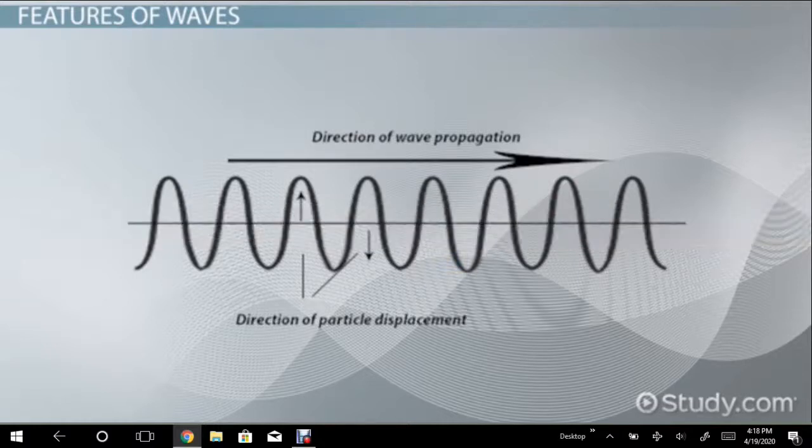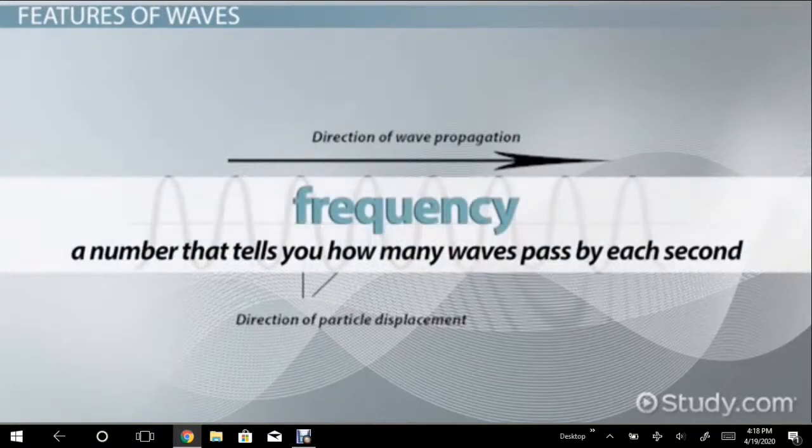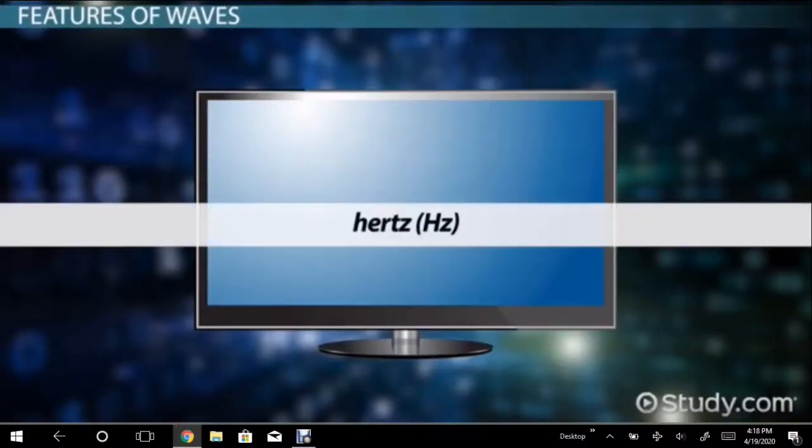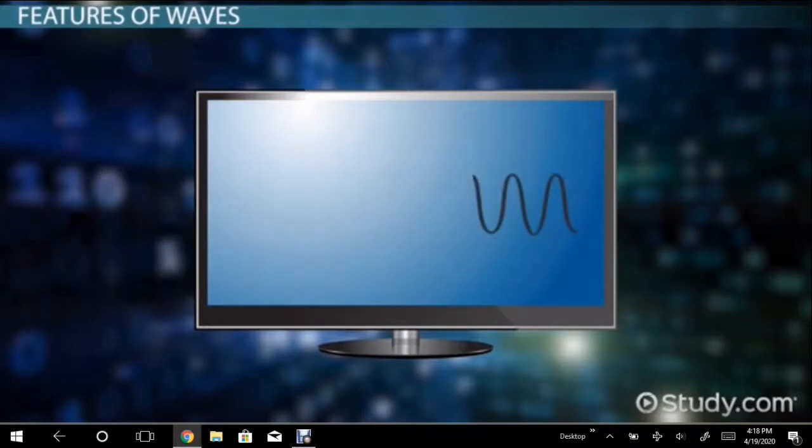Last but not least, frequency. A sound wave's frequency is a number that tells you how many waves pass by each second. Frequency is measured in hertz, hz. So, for example, 60 hertz, the frequency of most TVs, is 60 waves per second. Or in the case of television, this means that the picture refreshes 60 times a second.